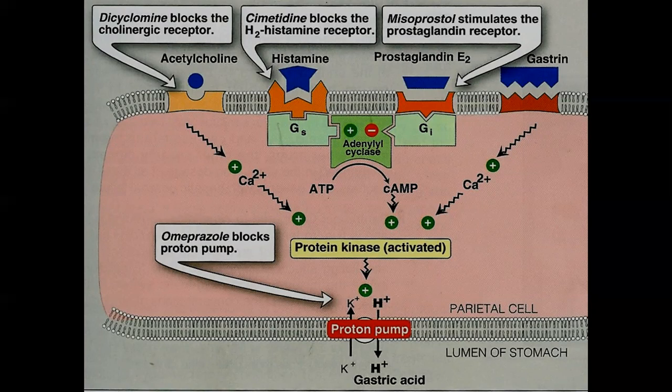In peptic ulceration, H+ acid secretion is tremendously increased. Because of this reason, necrosis, degeneration, and perforation occur at the gastric mucosal layer.